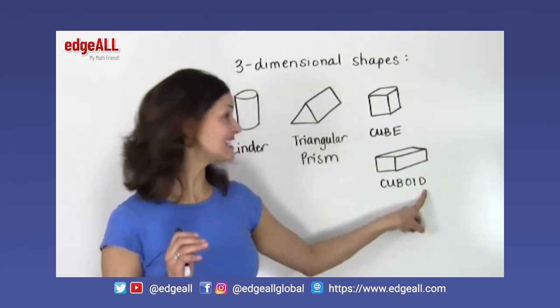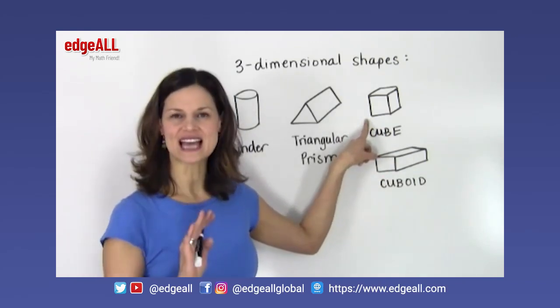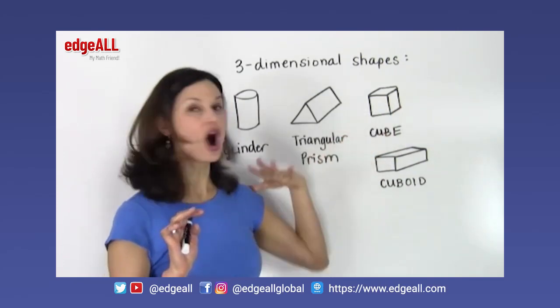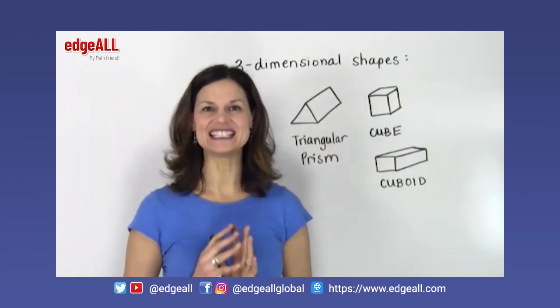However, in a cube, all the sides of a cube, all the measurements of the edges of the cube and the sides are all exactly the same length.